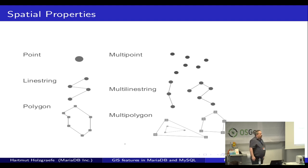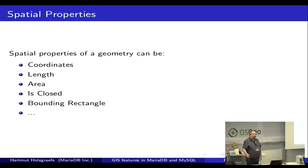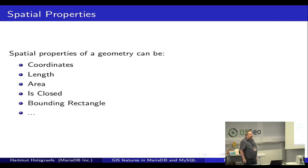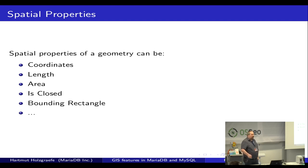We can process all these simple types and also work with additional properties: obviously the coordinates, the length of a line, the area covered by a polygon, whether a line string is closed, and the bounding rectangle — the rectangle just large enough to fully contain all the data. Then the next thing of interest is not only a single geometry, but also spatial relationships between two or more geometries.